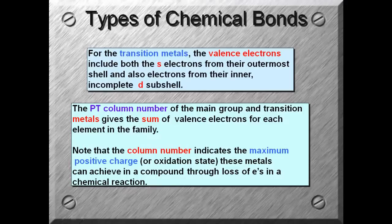The periodic table column number of the main group and transition metals gives the sum of valence electrons for each element in the family. Note that the column number indicates the maximum positive charge or oxidation state these metals can achieve in a compound through loss of electrons in a chemical reaction. All this is saying is those group 1 electrons, the alkali metals, will have a plus 1 charge. So their group number will match what charge they have, and that indicates the number of electrons they'll lose.